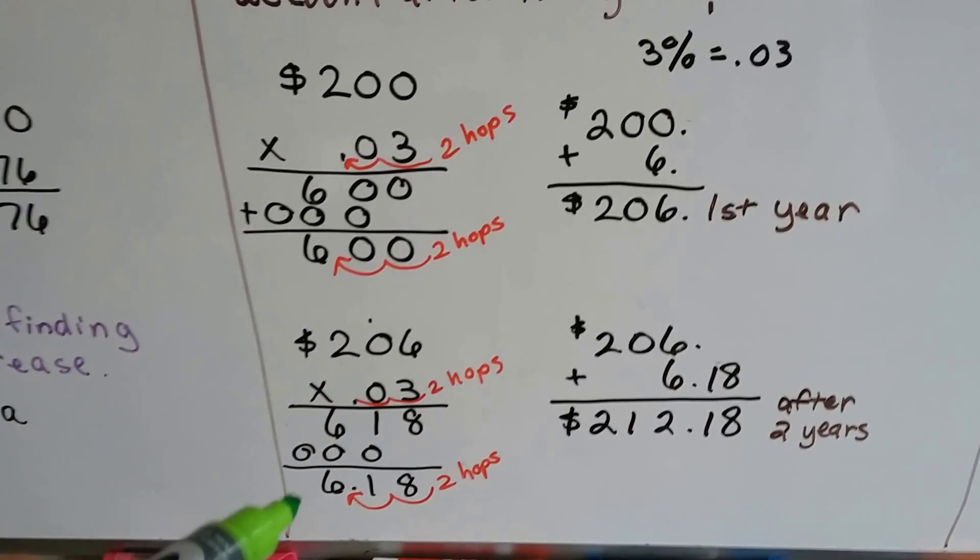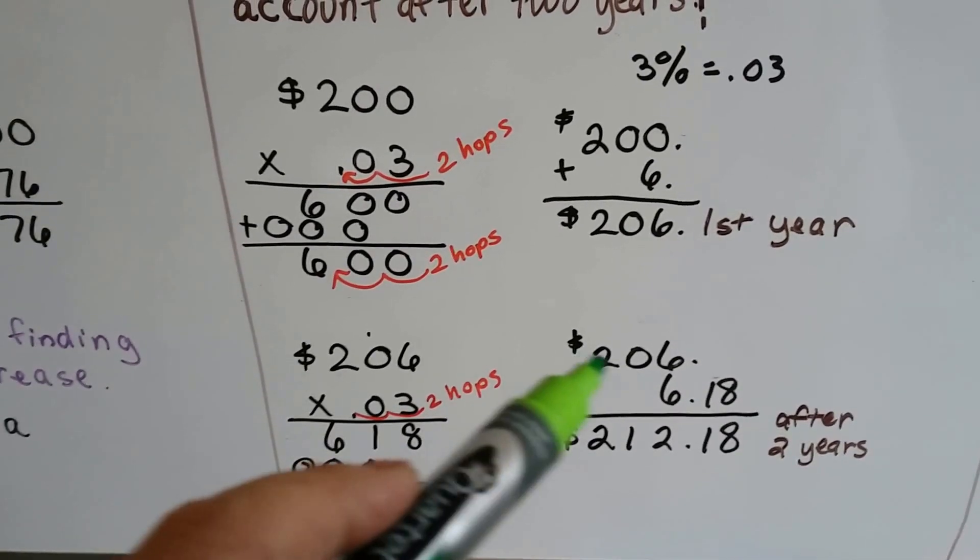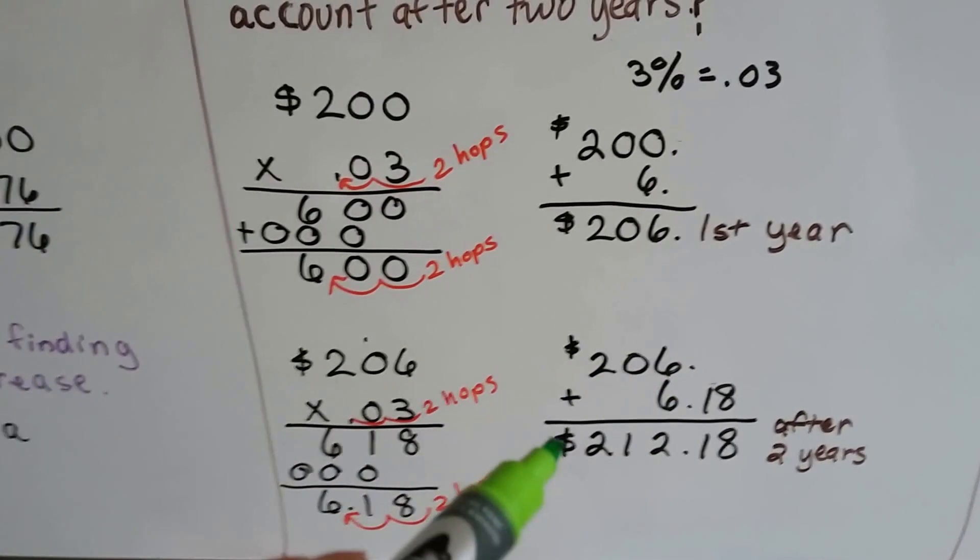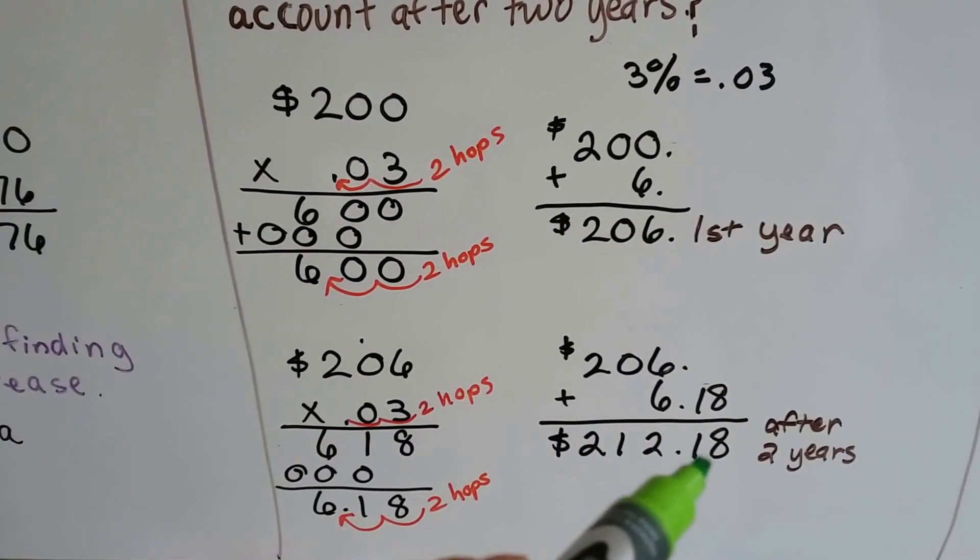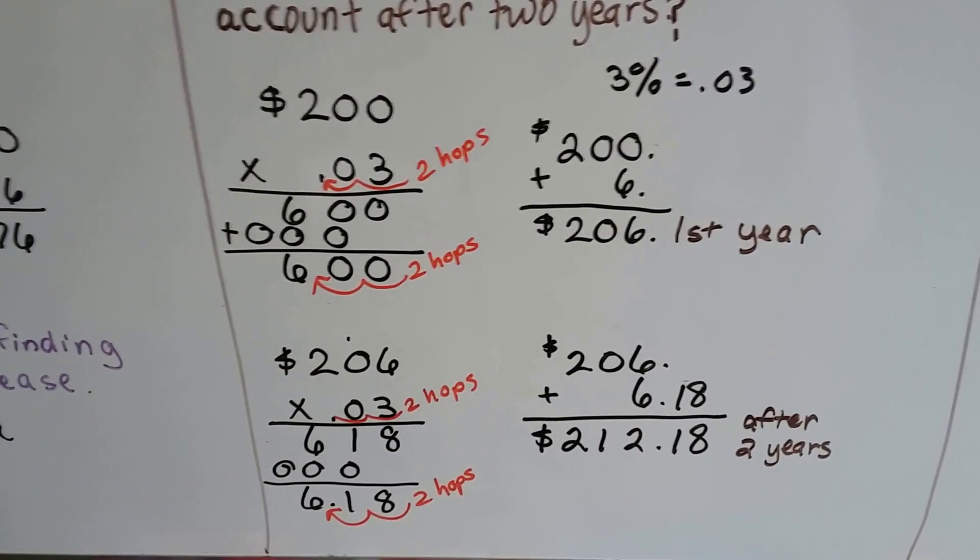And we do. We come up with $6.18 now. We add that to the $206 and now there's $212.18 in the account after two years.